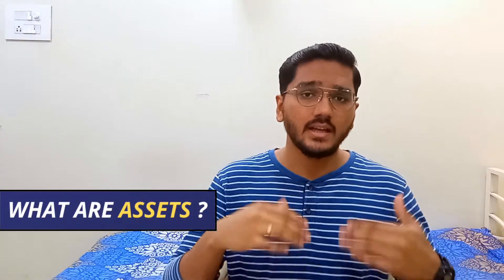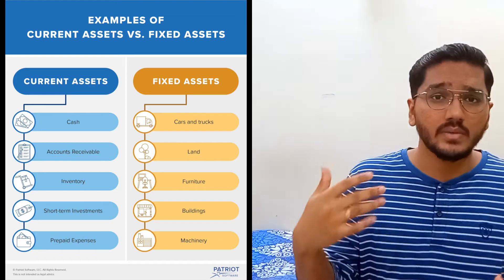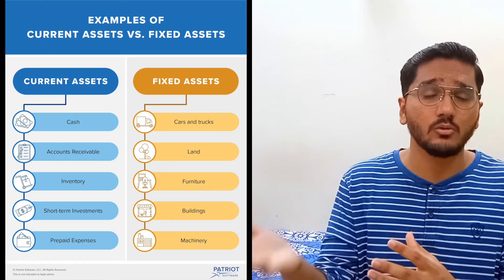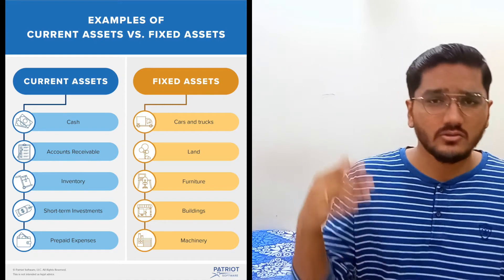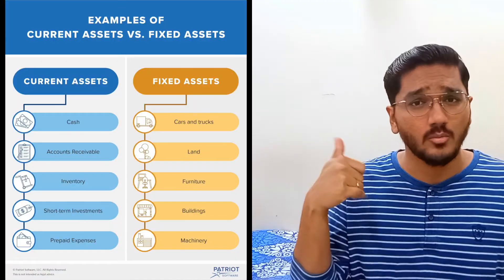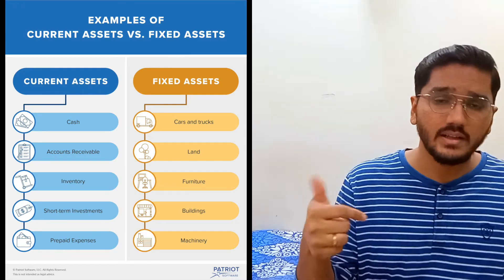Assets are something the business owns and can be classified into two types: current assets and fixed assets. Current assets are those which can be easily converted into cash — they are highly liquid — and include cash or cash equivalents, accounts receivable, investments, and inventory or stock. Fixed assets are things you own but converting them into cash is not easy; it may take time. These include equipment, land, property, or any infrastructure your business owns.